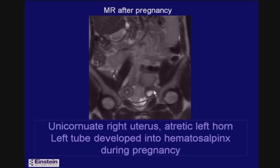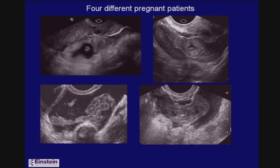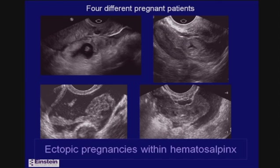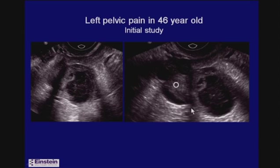The atretic horn had dilated from blood related to the pregnancy hormones, and blood went retrograde into the fallopian tube, causing a large palpable adnexal mass. When the patient was no longer pregnant, the main uterus and a slightly dilated atretic horn were visible — the left tube had only developed into a hematosalpinx during pregnancy. Hematosalpinx from ectopic pregnancy is clearly a common occurrence, and here are four examples in different patients where the tube itself is visible.